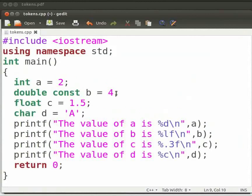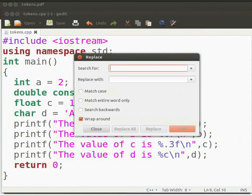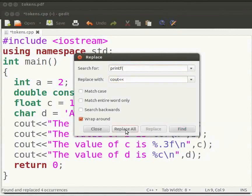Now replace the printf statement with the cout statement, since we use cout function to print a line in C++. Click on search and replace text option. Type here printf opening bracket, and here in this column type cout and two opening angle brackets. Now click on replace all and click on close.